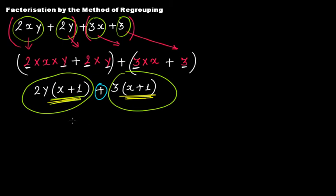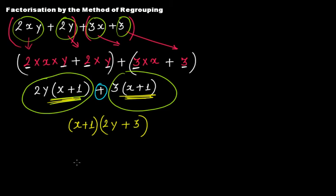So take out x plus 1 as the common factor. Inside the bracket you have 2y plus 3 — this is the distributive property of multiplication over addition. If you expand it, it gives 2y multiplied by x plus 1 plus 3 multiplied by x plus 1. Therefore, we have factorized this algebraic expression into its two factors: x plus 1 is one factor, and 2y plus 3 is the other. Written as x plus 1 multiplied by 2y plus 3, this means the expression is factorized.